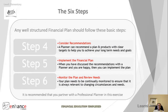Step number four is where you start to consider recommendations. A professional planner can recommend a plan and products with clear targets to help you achieve your long-term needs and goals. Step number five involves the implementation of the financial plan — once you've discussed the recommendations with a suitably qualified planner and you're happy, you can implement the plan. Step number six: monitor the plan and regularly review your needs and goals. Your plan needs to be continually monitored to ensure it is always relevant to changing circumstances and needs. It is recommended that you partner with a professional planner in this exercise.